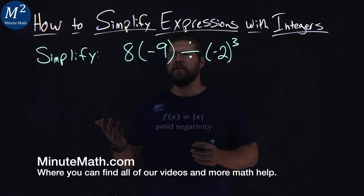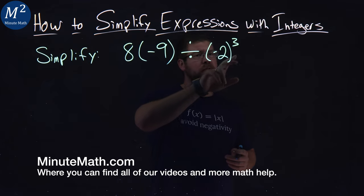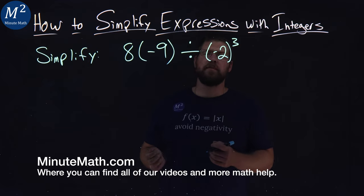We're given this problem here: 8 times negative 9 in parentheses, divided by negative 2 in parentheses to the third power. Well, how do we simplify this?